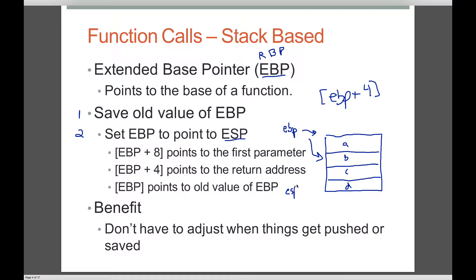ESP is pointing to the top of our stack. The benefit of using EBP as a fixed frame reference is that while ESP grows as our stack changes through program execution, EBP can remain constant. If ESP grows by 8 bytes and points further down, EBP remains the same, and we can still reference local variables A, B, C, and D based on consistent offsets. That's the benefit — it becomes more consistent when dealing with stack locations.